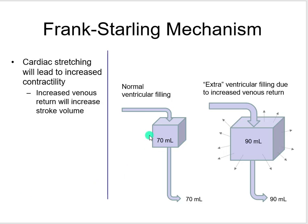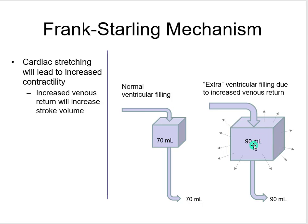Consider what would happen without this reflex: if 90 came in but only 70 was ejected, and then 90 more came in and only 70 more was ejected, you would back up the ventricles — you wouldn't sufficiently empty them. That is not good. The Frank-Starling mechanism prevents this from happening.